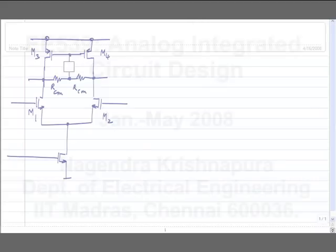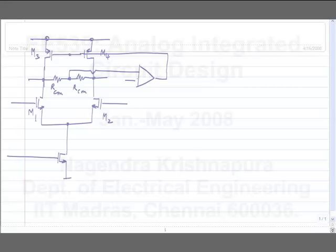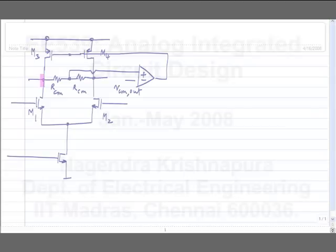How do we fix that? We can have a separate amplifier. If we do this and connect it at VCM, the output will settle to VCM_out. The output common mode value will be VCM_out. Now the output can swing differentially — if this and this swing in opposite directions, nothing happens to the voltage at the center and the common mode feedback does not respond to it.